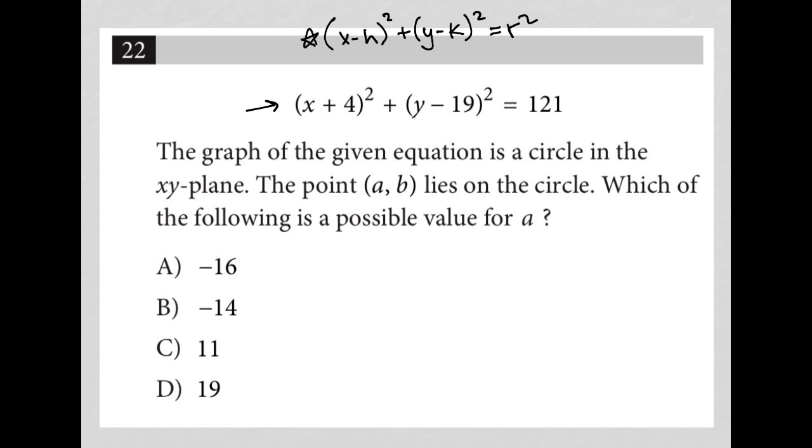Just by seeing that connection, I immediately can figure out some things about this circle. I know that the circle has a center at (h,k), which means that our center here would be (-4, 19) - it's like the opposite signs of those numbers there. And I know that r is the radius, so here if r² is 121, that means my radius is equal to 11.